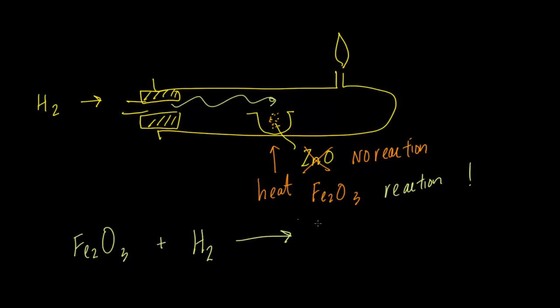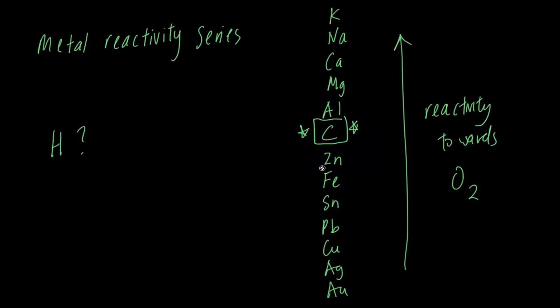Iron oxide plus hydrogen gives you iron plus water. Some water droplets will start to form. This proves that hydrogen is more reactive than iron. The position of hydrogen is here: hydrogen is more reactive than iron but less reactive than zinc.